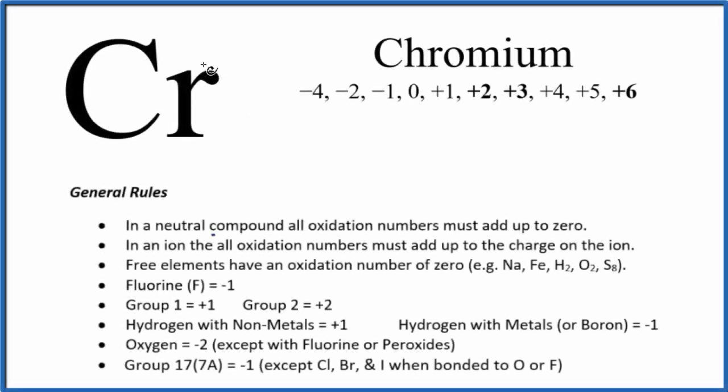In this video we'll look at the oxidation number for Cr, chromium. Chromium can have a number of different oxidation states depending on what it's bonded to, but when it's just Cr with no positive or negative signs after it, it's neutral. When it's neutral, the oxidation numbers for neutral substances add up to zero.